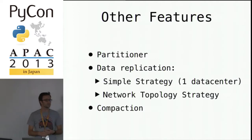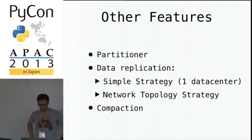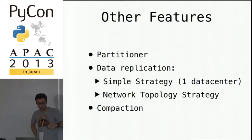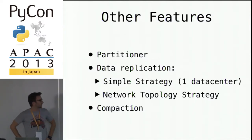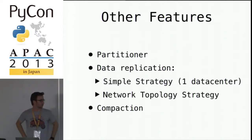Other features important to understand before starting with Cassandra: the partitioner is an algorithm that determines where data is dispatched on the nodes. Depending on your snitch, you can use different data replication strategies. If you have one data center, the simple strategy — often explained in tutorials — is the one to go for. For more complicated topologies you should use the network topology strategy. Finally, compaction: Cassandra's good performance comes from every incoming data being first put in memory, written into a log file, and finally compacted to the organized file system.